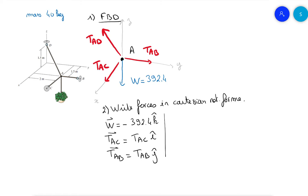To find TAD, we first need to find the position vector, then the unit vector, and then we can express TAD. So let's find the position vector RAD — going from A to D. On i-hat we are going minus 1.5, and on j-hat we are going minus 2.